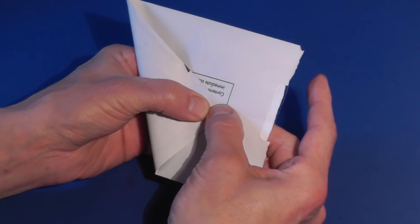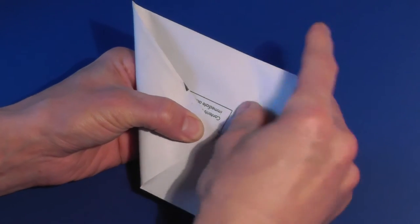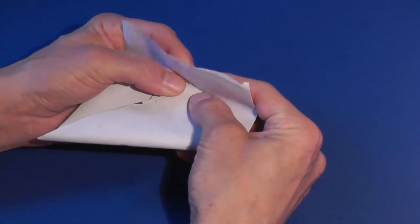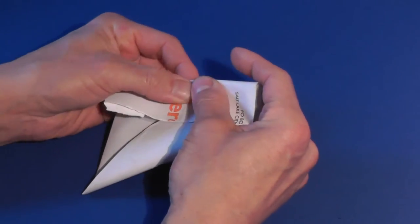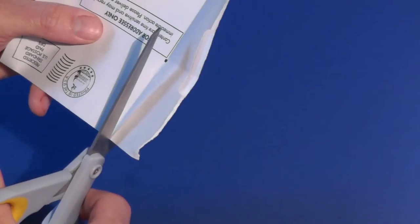Mark the point where the corner lies either by drawing a line there or making a fold like I did. You could also simply cut the envelope so that it is 0.866 times as long as it is tall.